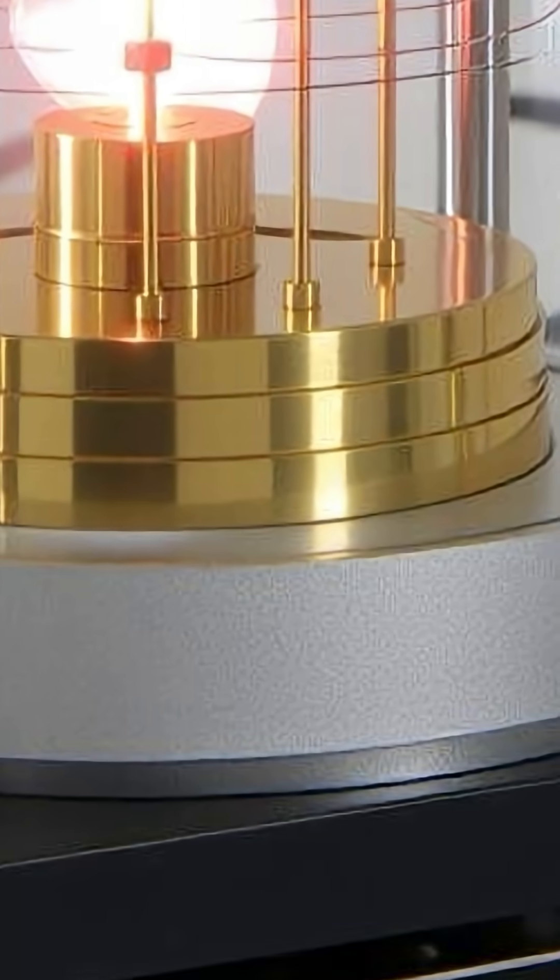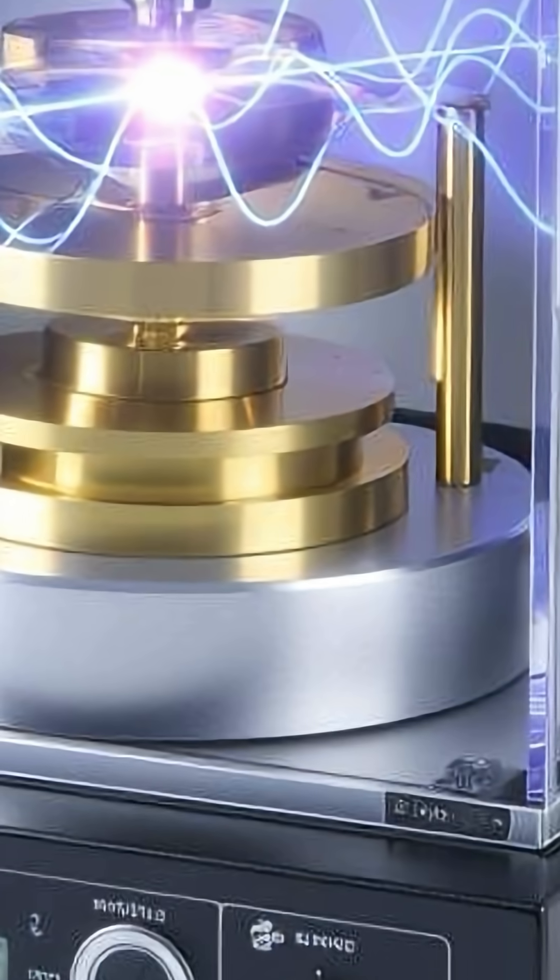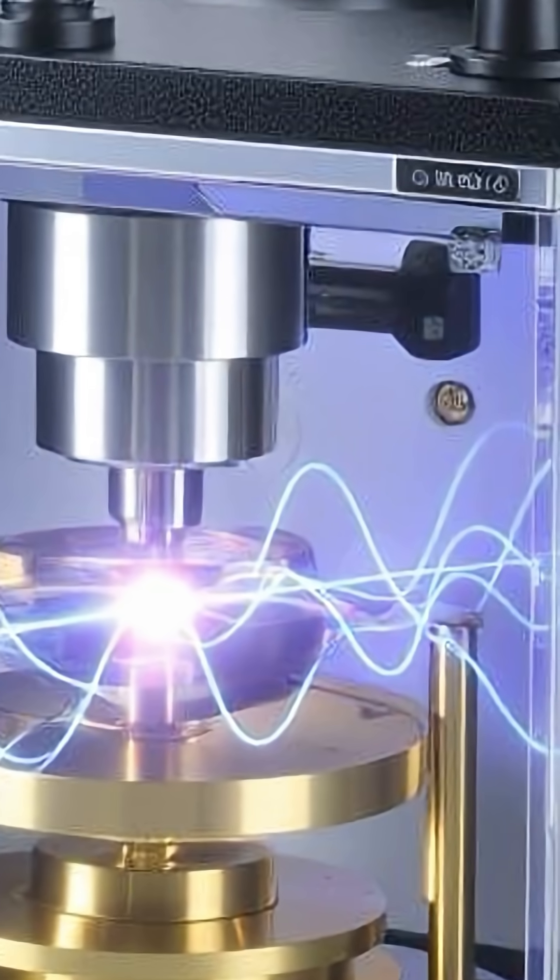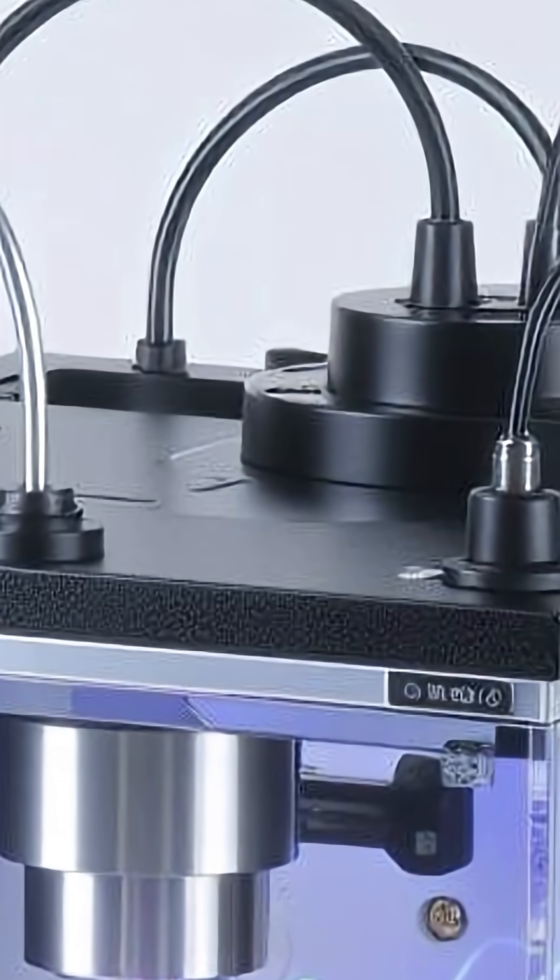The precision of this atomic definition is astounding. Modern atomic clocks are so accurate that they would only be off by about one second every 100 million years.